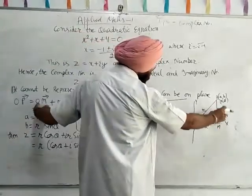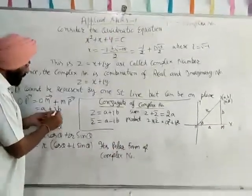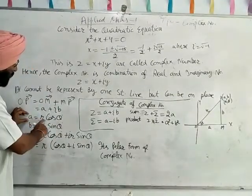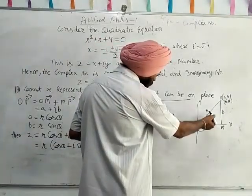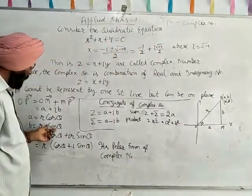From point P, z = a + ib, and a = r cos theta. In polar form, a = r cos theta, because a over r is cos theta. Similarly, b = r sin theta.